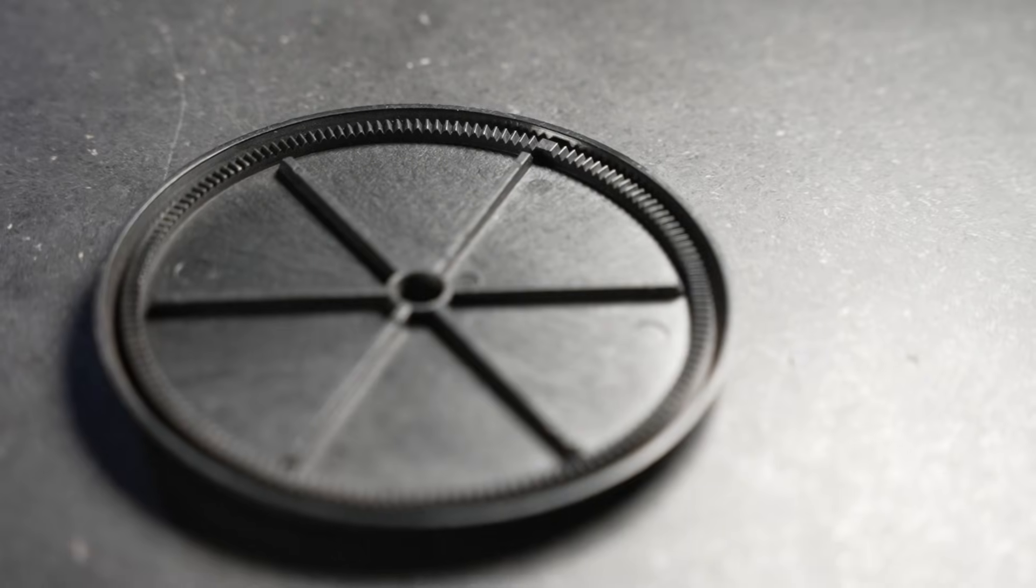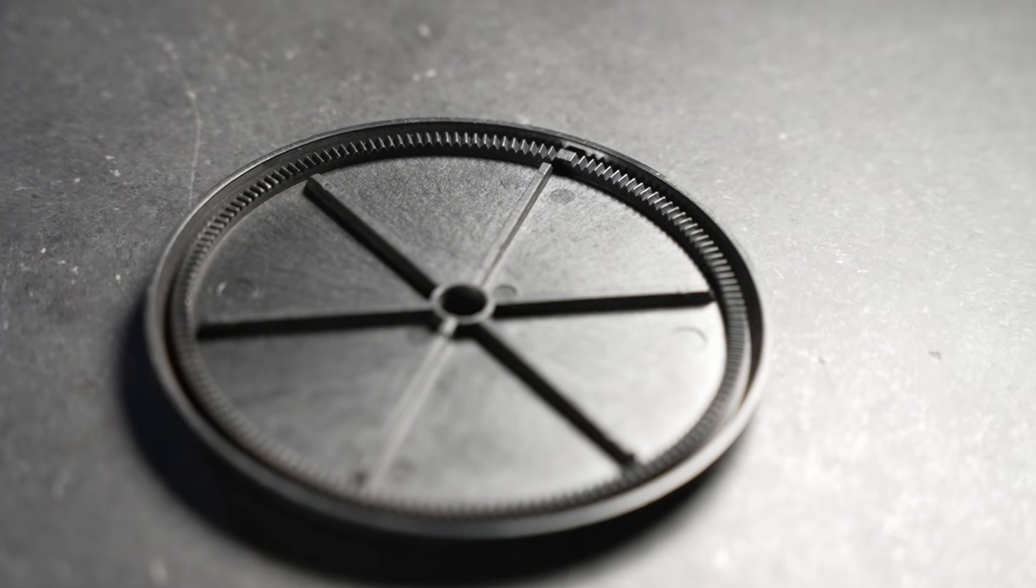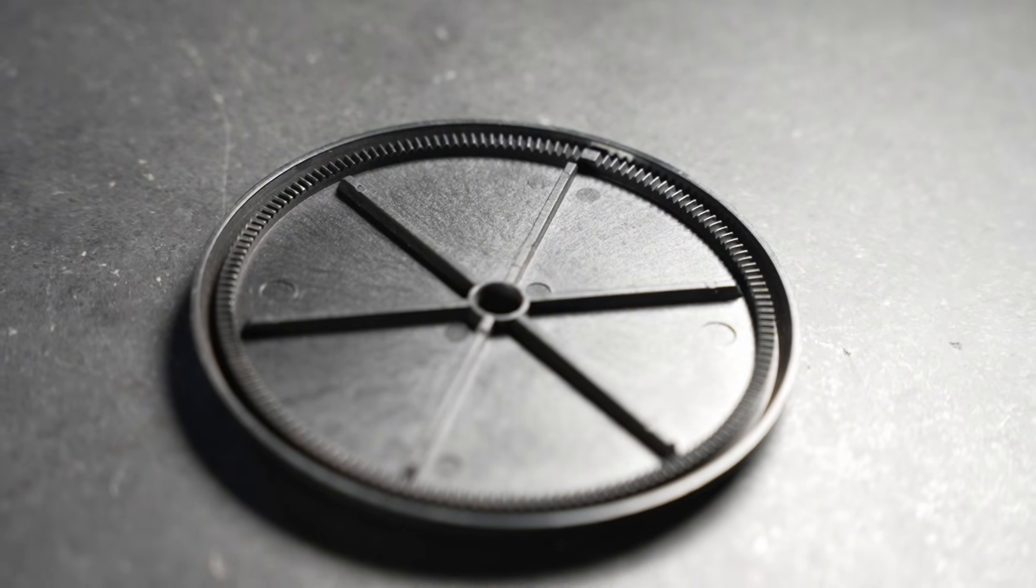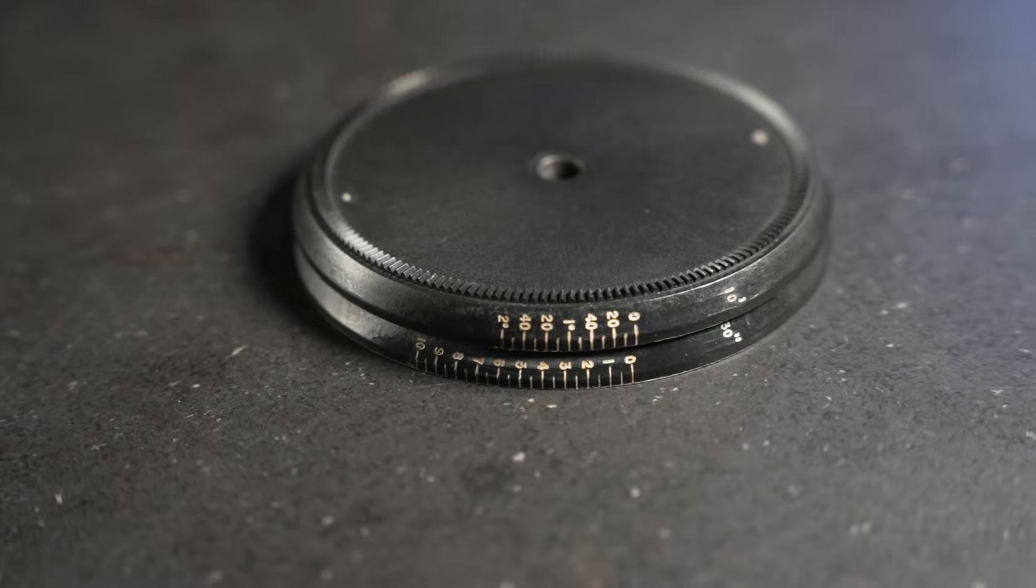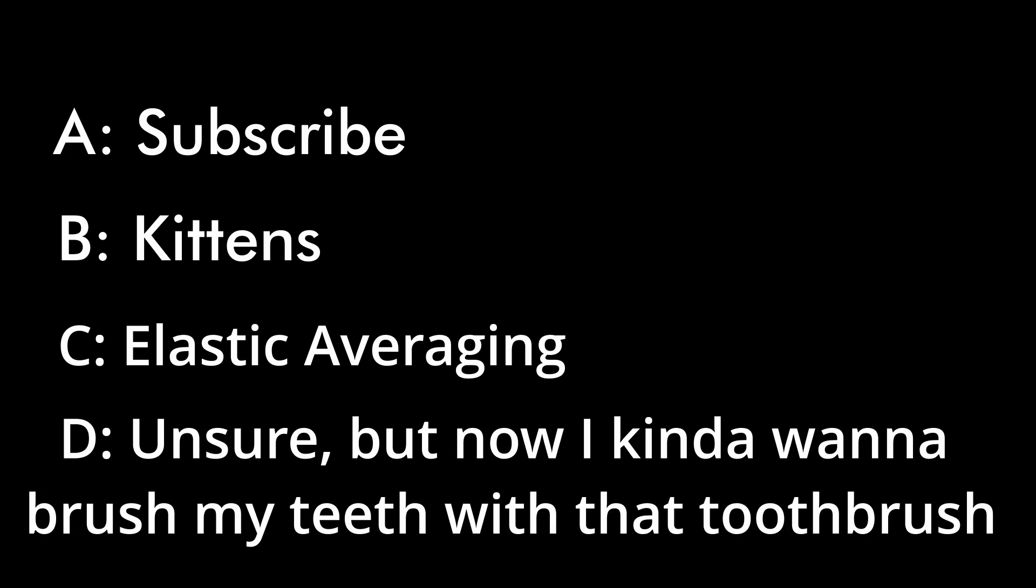But first the quiz. Being made of plastic, in addition to being compliant to small amounts of dust, the face gears can move in very tiny ways which helps average out errors and make this device more accurate. This is called: A. Subscribe. B. Kittens. C. Elastic Averaging. D. Unsure, but now I kind of want to brush my teeth with that toothbrush. Answers in the comments, please.